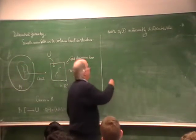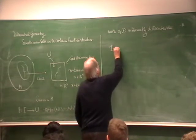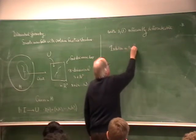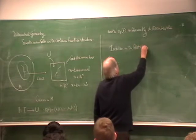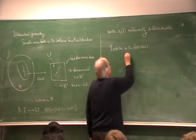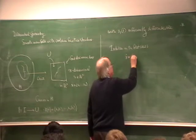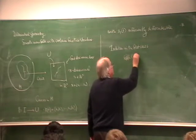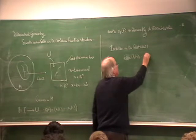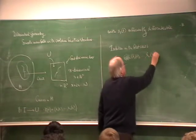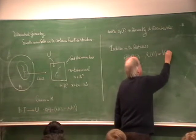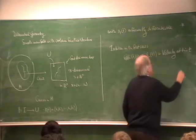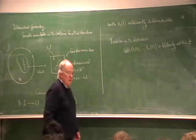And intuitively, intuition in the flat case, x dot, which is the derivative x1 dot at time t, which is the derivative of each of the components, that is the velocity of the curve at time t in the flat case.